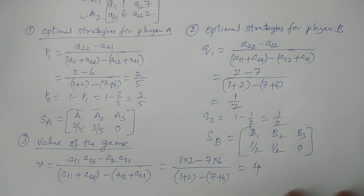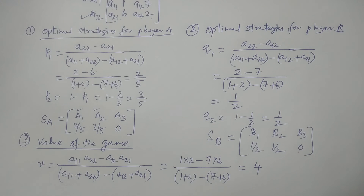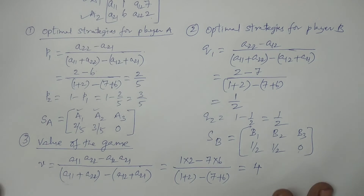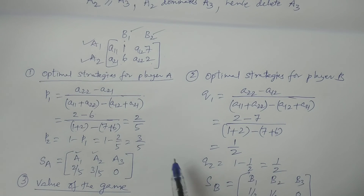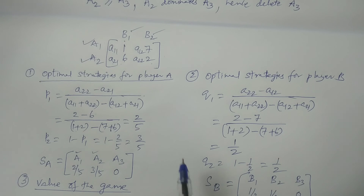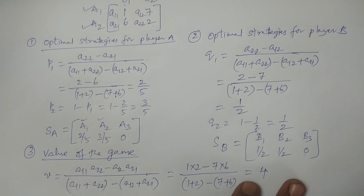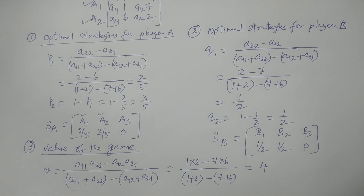In summary, using the Dominance Principle we reduced the 3 by 3 game to a 2 by 2 game. Player A and Player B each have two active strategies, and using the 2x2 rectangular game formulas we calculated P1, P2, Q1, Q2, and the value of the game. This demonstrates the full Dominance Principle procedure.